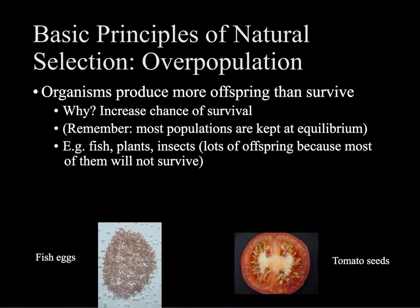The third principle of natural selection is overpopulation, and this one is probably the most confusing to students. What this means is that not everyone survives — organisms produce more offspring than are going to survive generally. Humans are to some extent an exception because most human babies now in the 21st century do survive to adulthood, though not always the case in developing countries or if we traveled back 100 years. So why do organisms produce more offspring than will actually survive? It increases the general chance of survival.